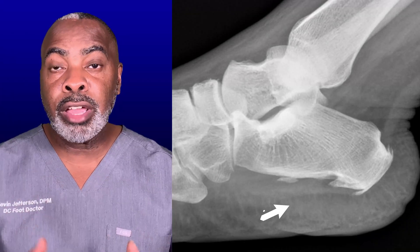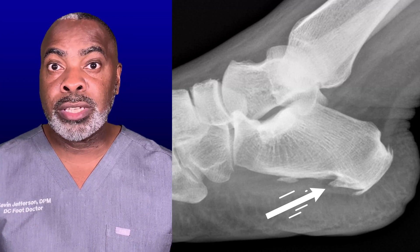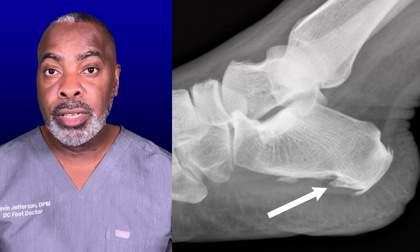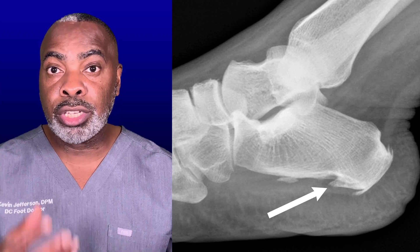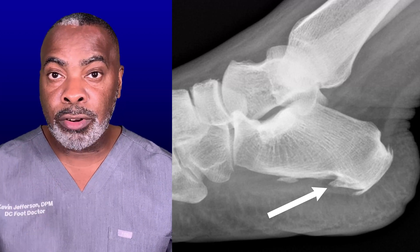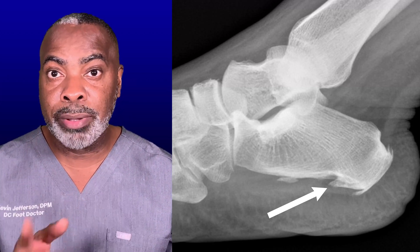Some people think plantar fasciitis is the same as having a heel spur. A heel spur is an extra growth of bone on the bottom of the heel or the back of the heel. A person can have plantar fasciitis without a heel spur, or a person can have a heel spur without plantar fasciitis. Here's an x-ray of a patient of mine who was having foot pain somewhere else, and in the x-ray we see this huge heel spur. However, she had no heel pain.